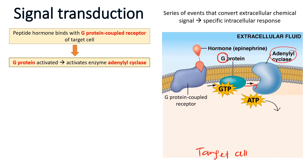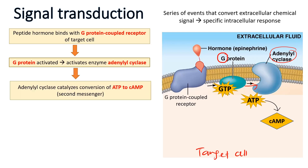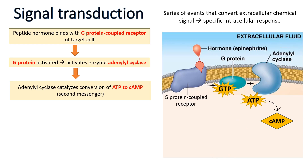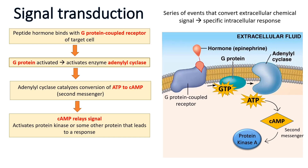Activation of adenylyl cyclase will then cause the conversion — it catalyzes the conversion of ATP to cAMP, or cyclic AMP. Cyclic AMP acts as a second messenger. The function of G-protein is to shuttle the signal between the receptor and the second messenger. Next, cAMP relays the signal — it will activate protein kinase A or other proteins that will lead to a response.